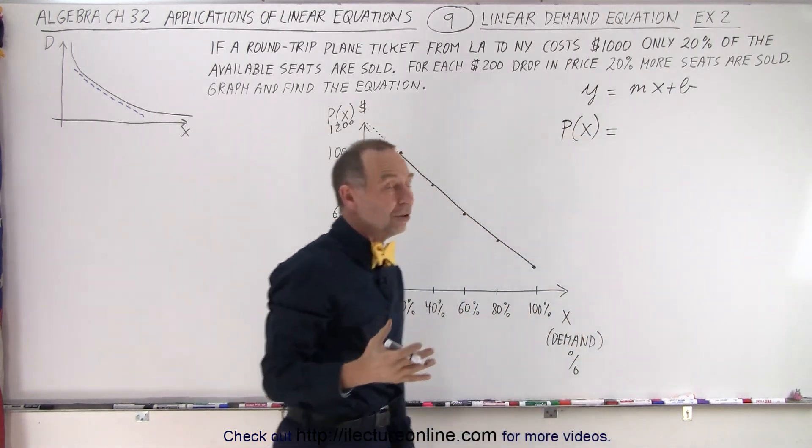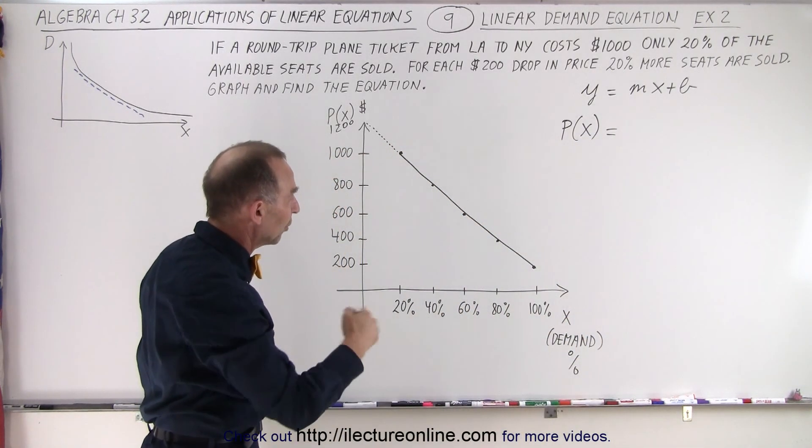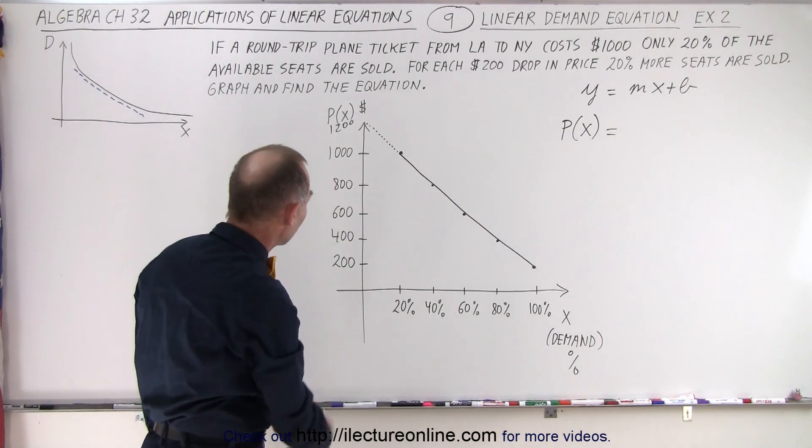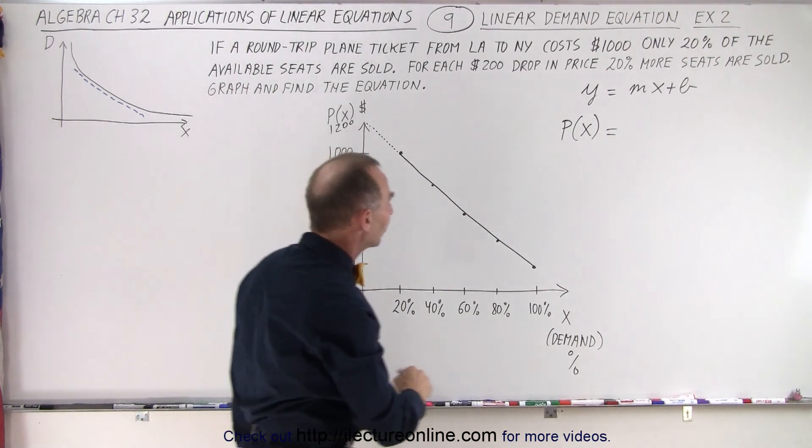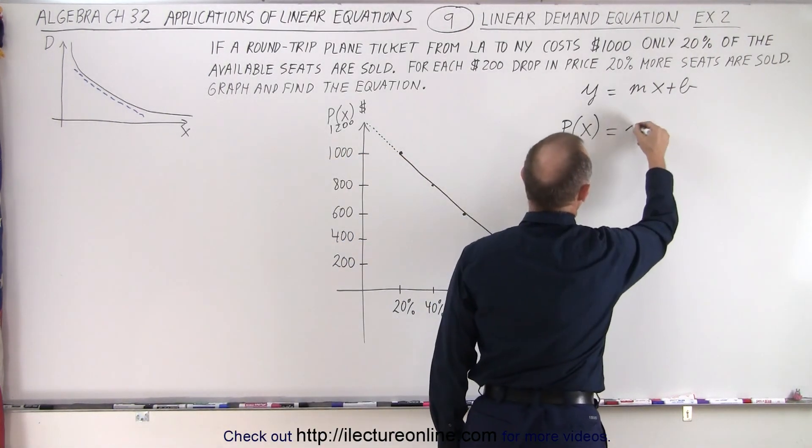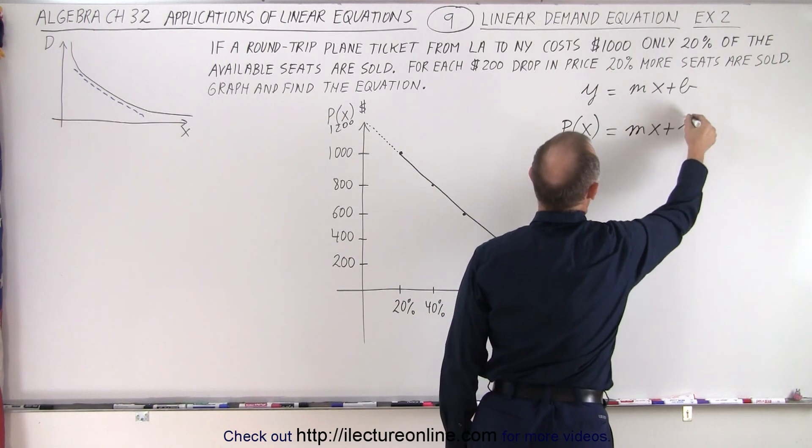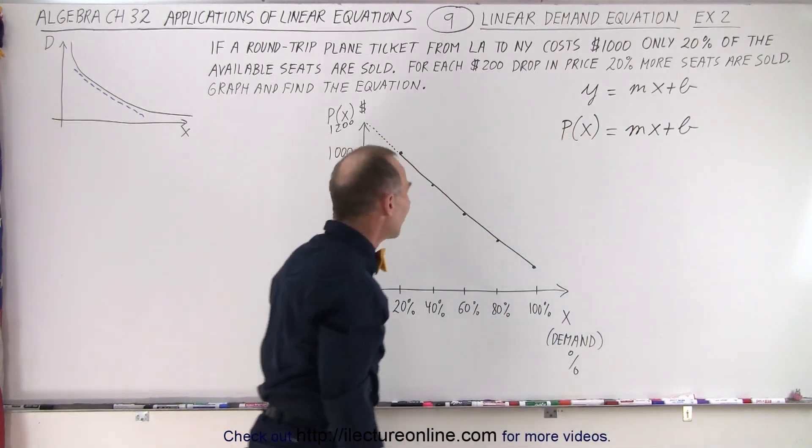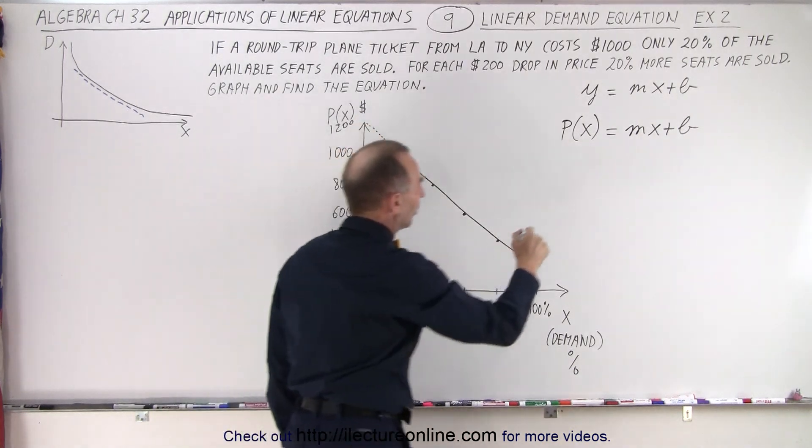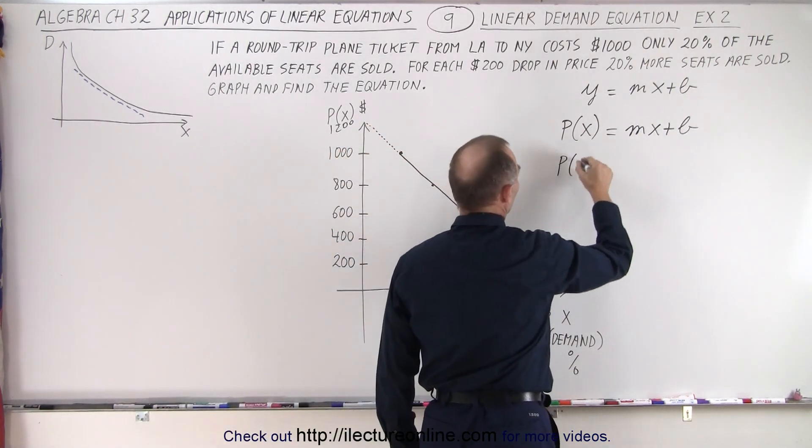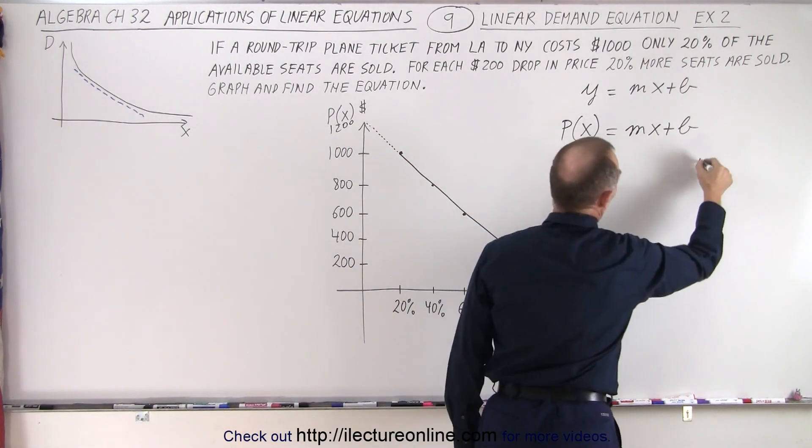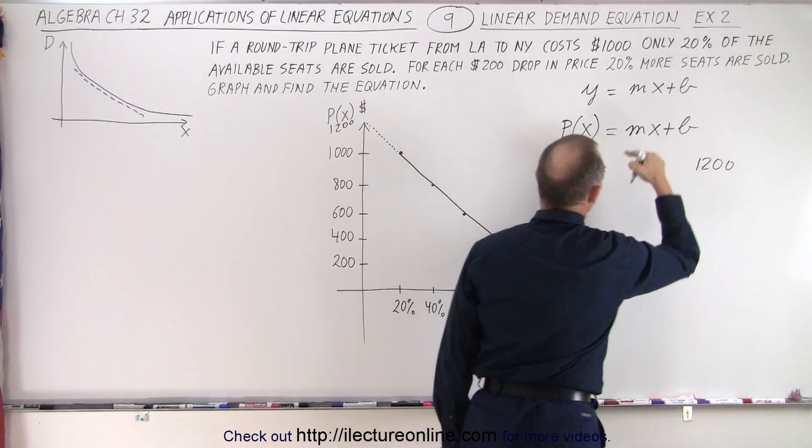So that's the equation format of a linear equation in algebra with an x and a y-axis. In this case, we'll have a p-axis and an x-axis. So the slope would be m times x plus b. So now we need to find the intercept. You can see the intercept will occur at $1,200. So the price as a function of x is equal to $1,200. What about the slope?